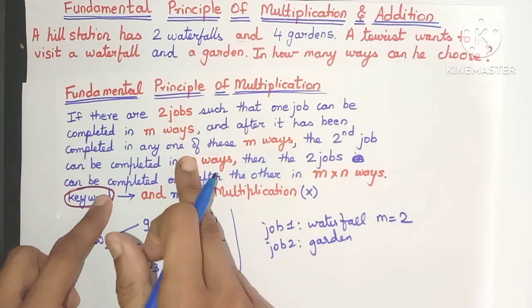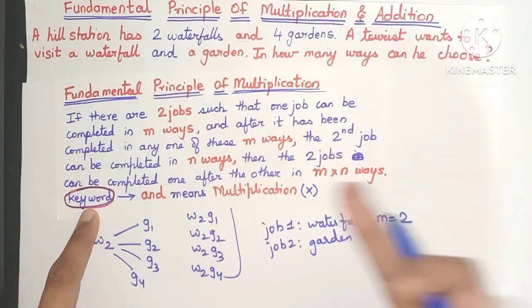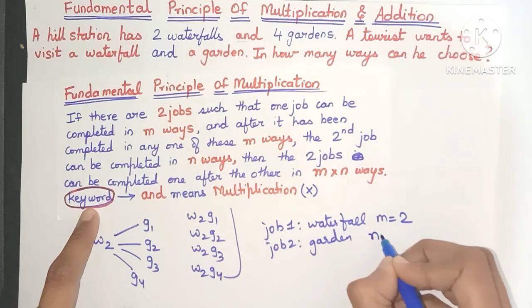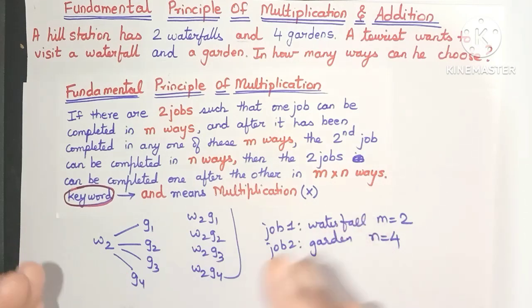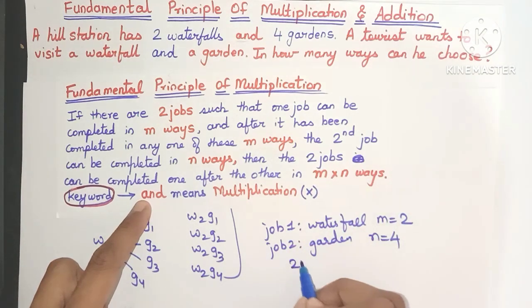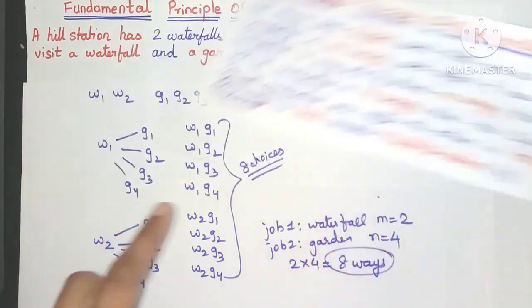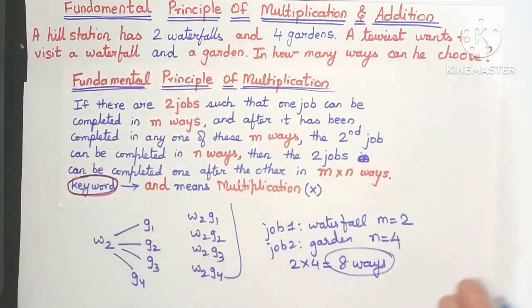After it has been completed in any one of these M ways, the second job — visiting the garden — can be completed in N ways. There are four gardens, so I can visit the garden in four ways; N is four. The principle states that the two jobs can then be completed one after the other in M multiplied by N ways — that is two multiplied by four, which is eight ways. We got the same answer as before, but by using the principle we can directly get the answer without listing out all the combinations.